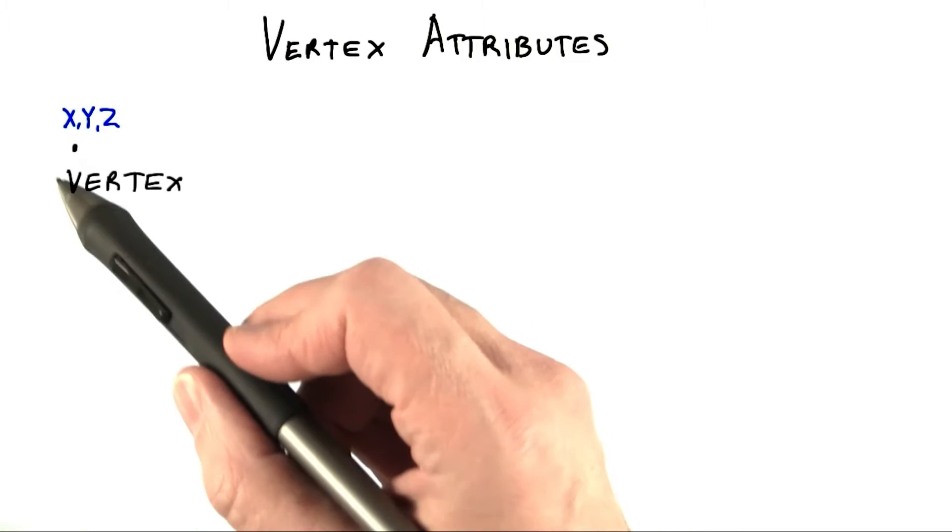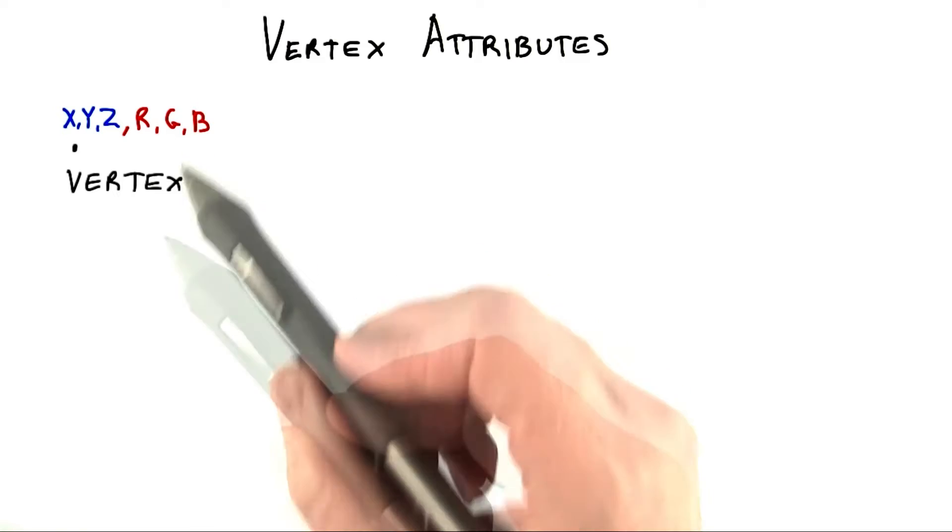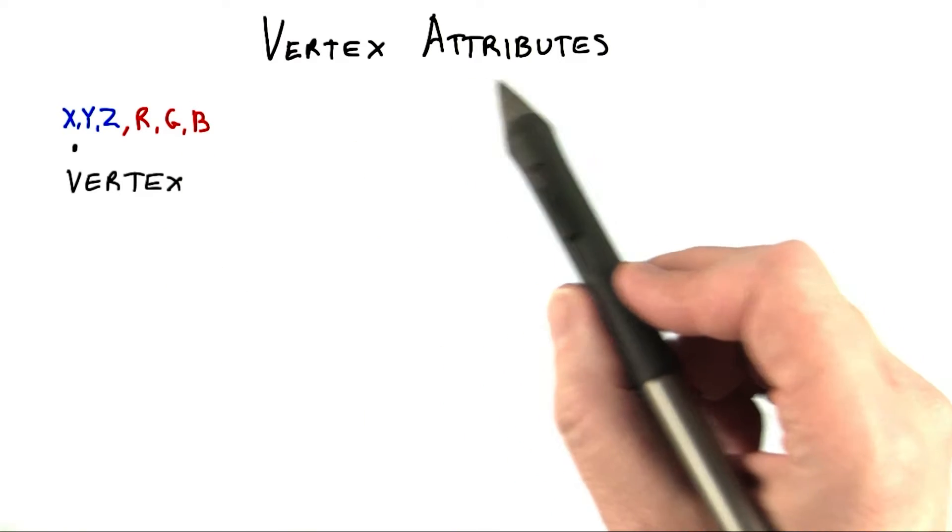Up to this point, a vertex has been defined by just a 3D coordinate. In fact, you can attach a large amount of data to each vertex. Data attached in this way is called an attribute in WebGL.